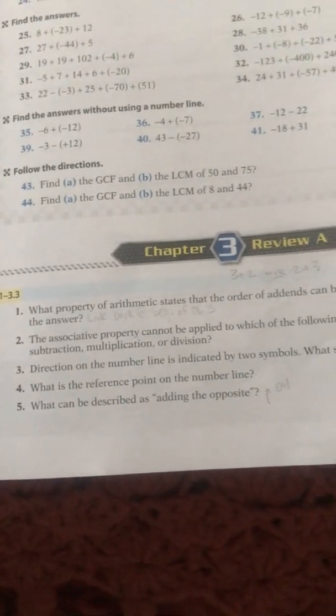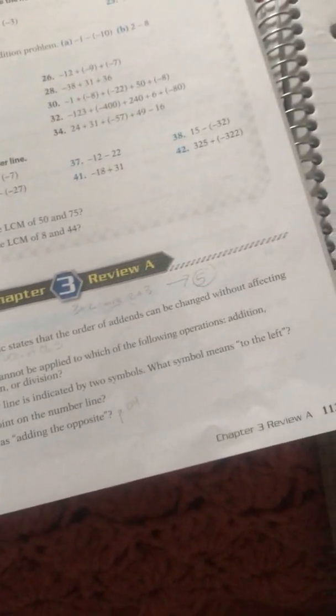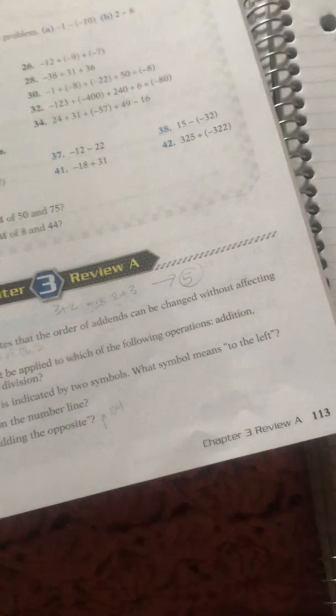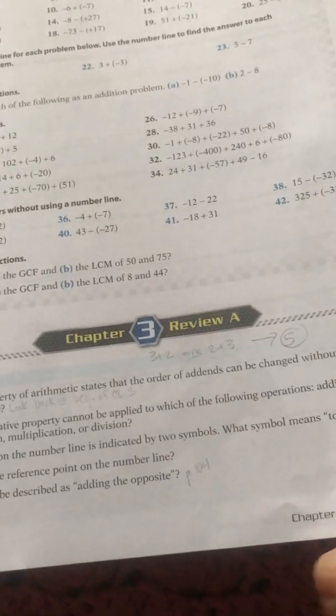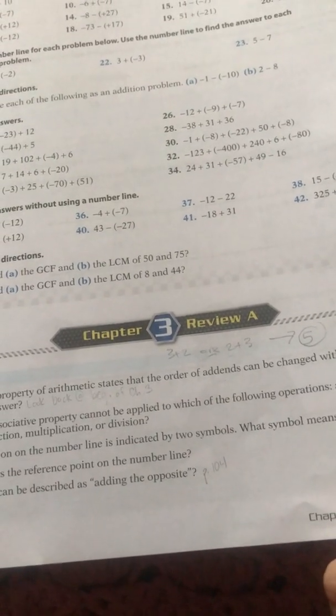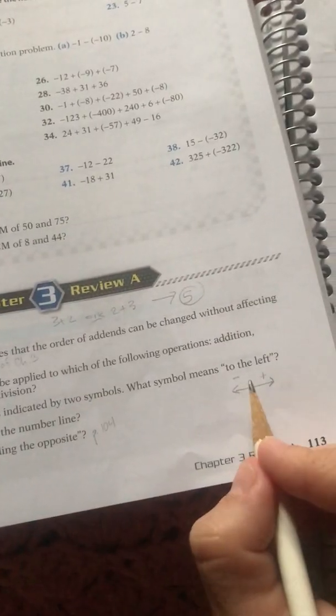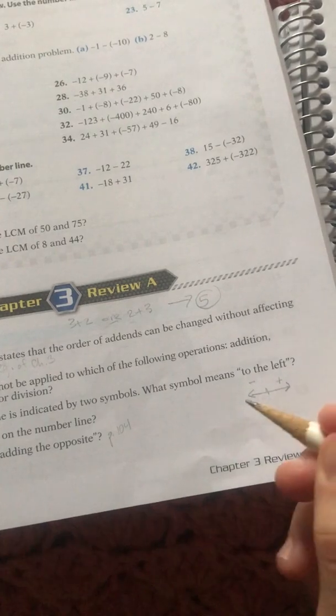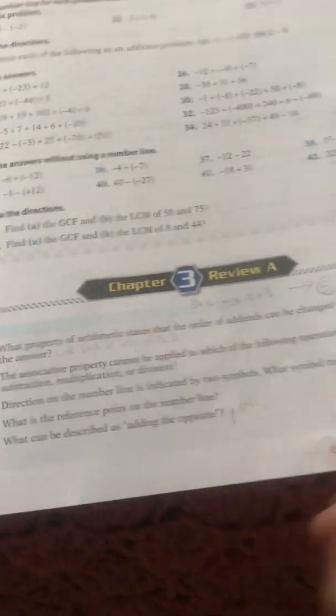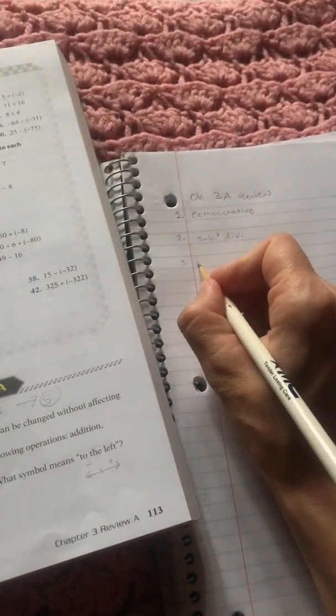Number three, direction on the number line is indicated by two symbols. What symbol means to the left? Well, if you have a number line, that's your positive up there. That's your negative. So to the left is going to be negative. So number three, negative.